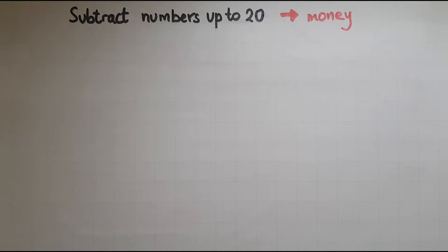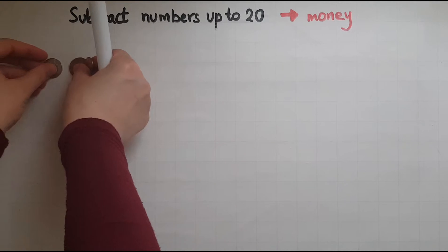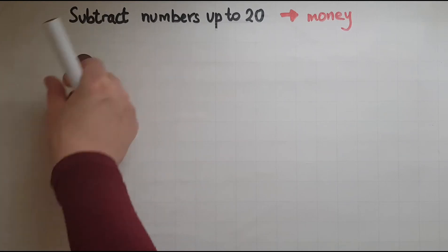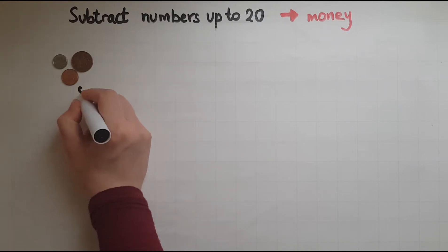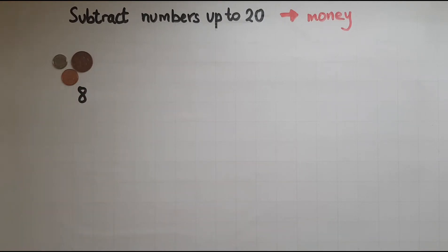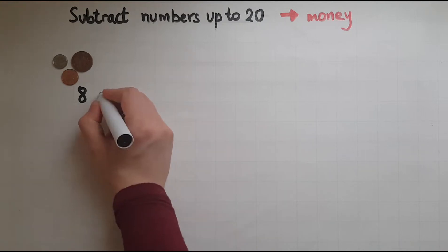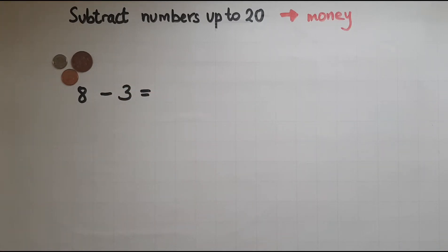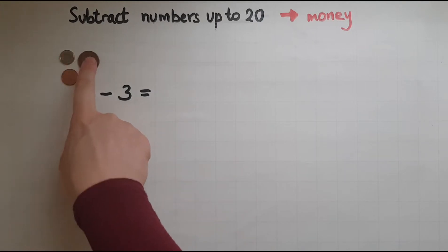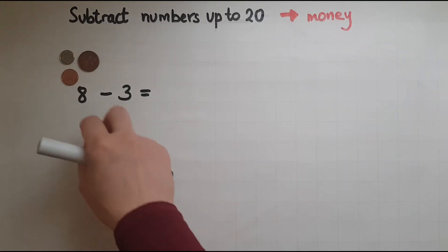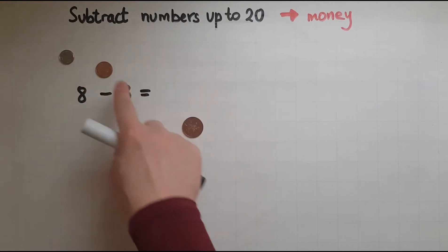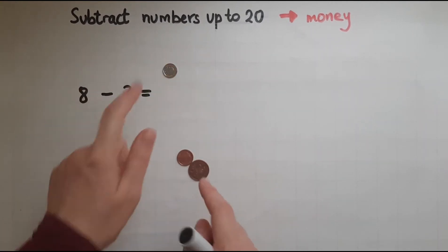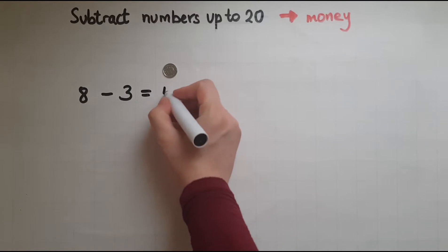So I have 8p to begin with, and I spend 3 pennies. So what do I have left now? From the 8p I will take away 3. So 2, 3, what is left? And that is 5p.